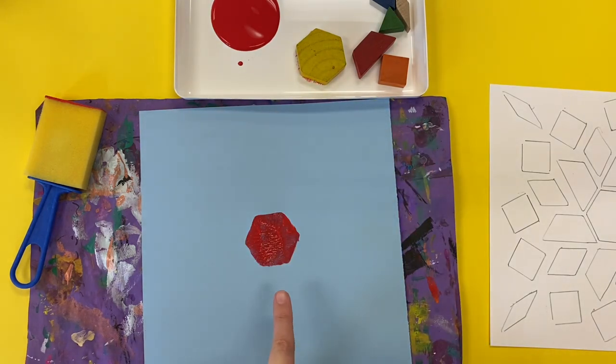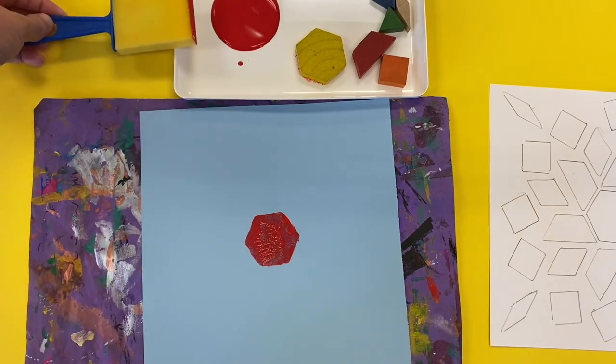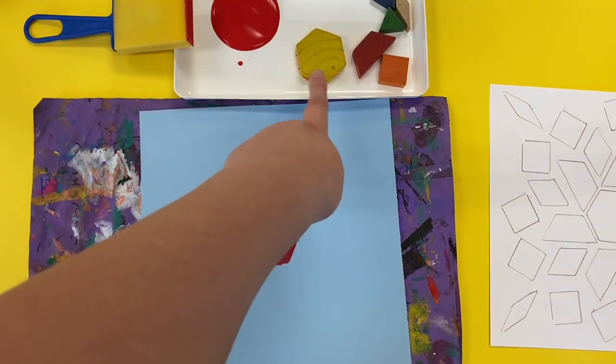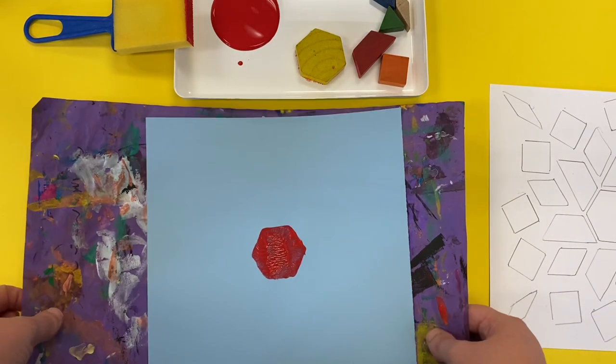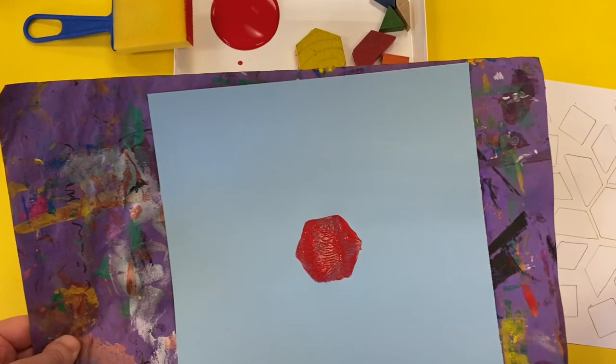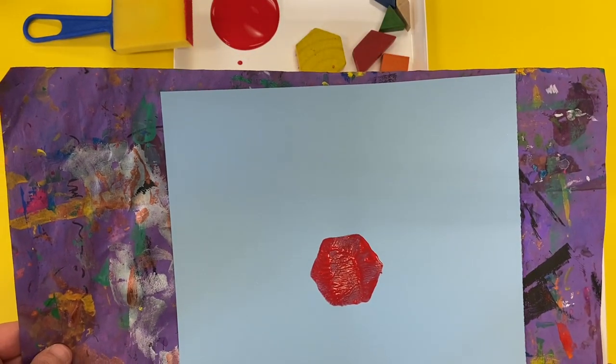When you're finished with one color, you are going to leave the foam brush at your table. You're going to leave your shapes on the tray with the paint side facing down and then you're going to pick up your messy mat, pick up your sketch, and you're going to walk to another spot if you need to use a different color.